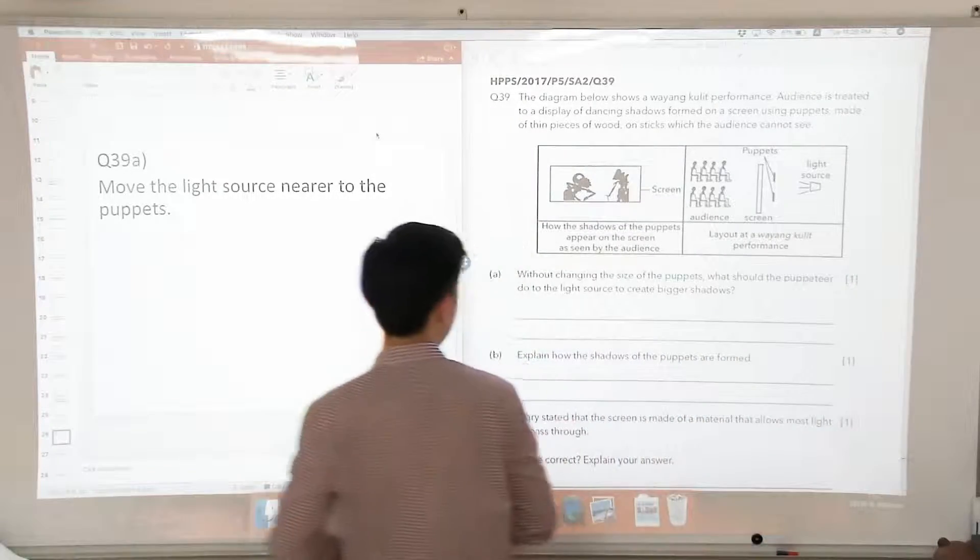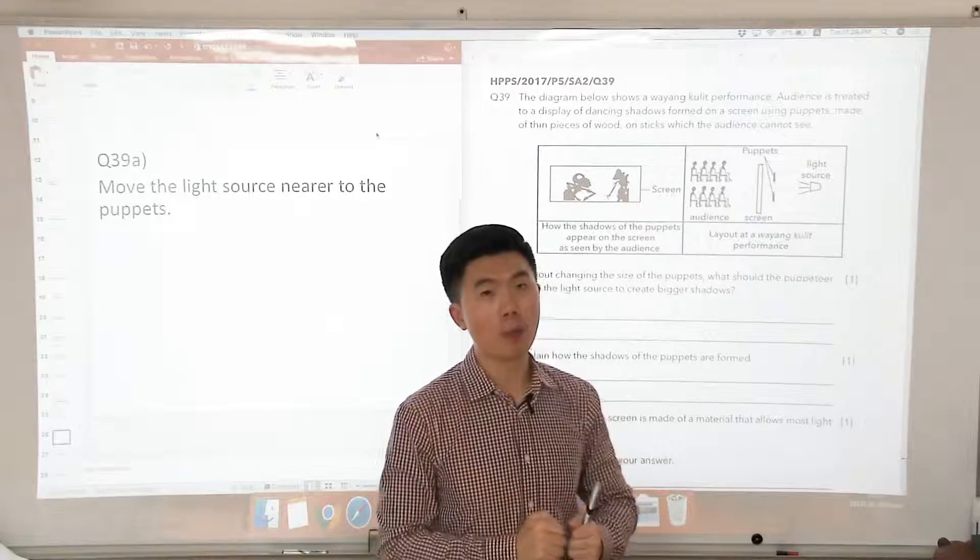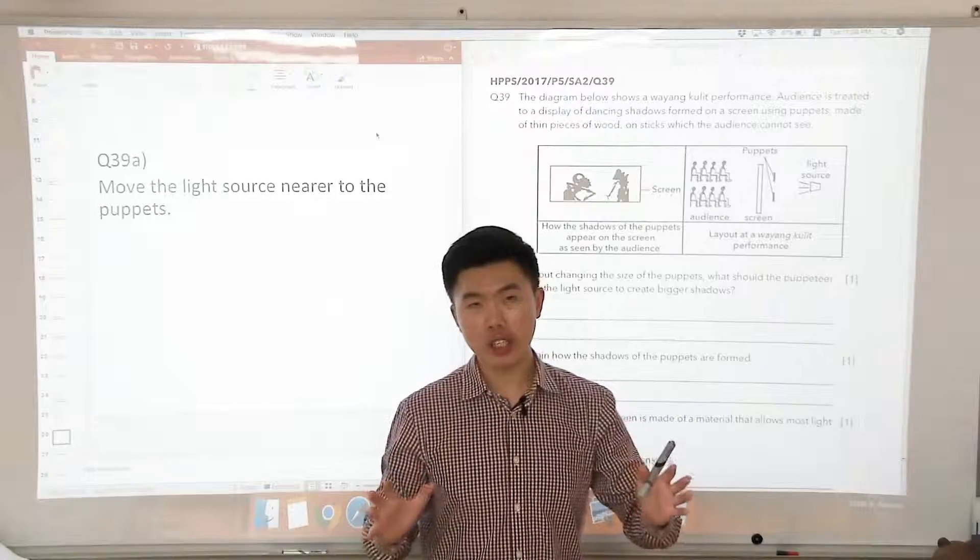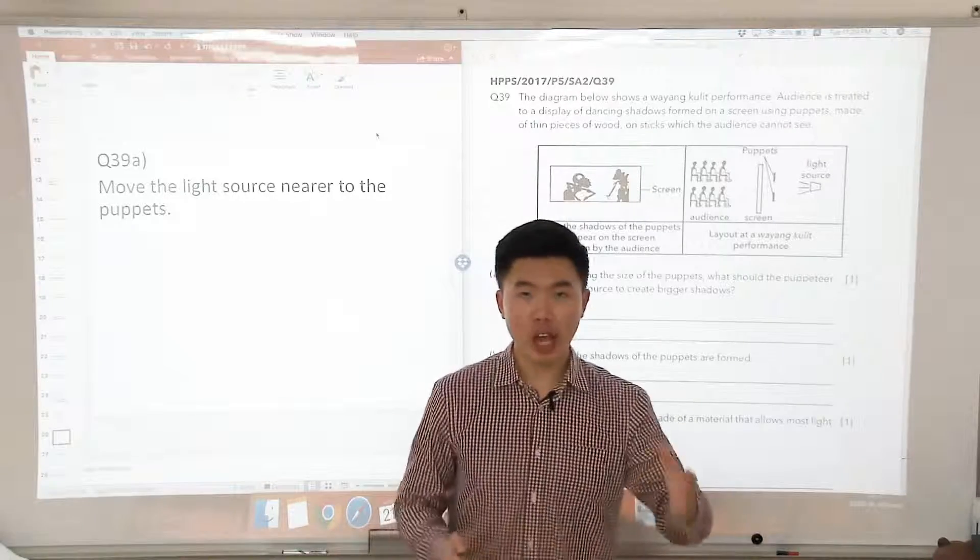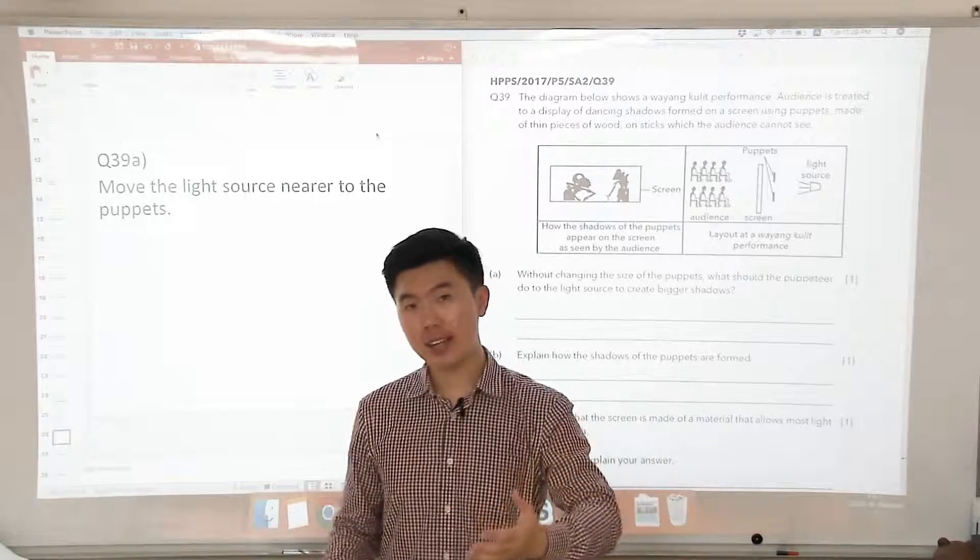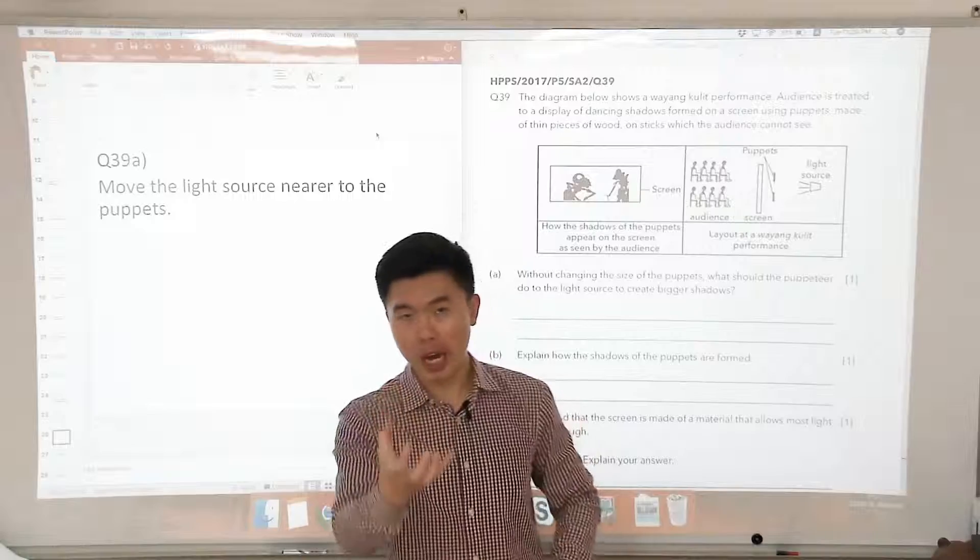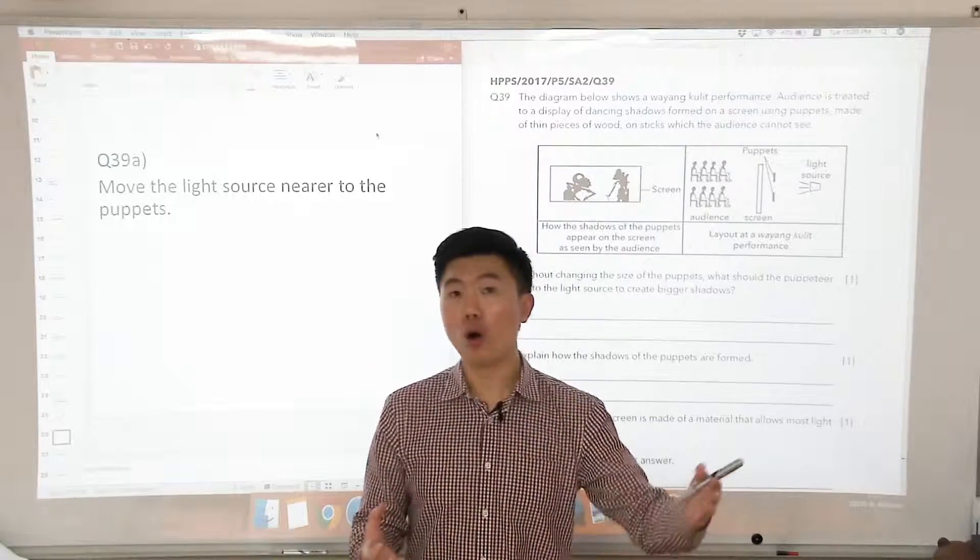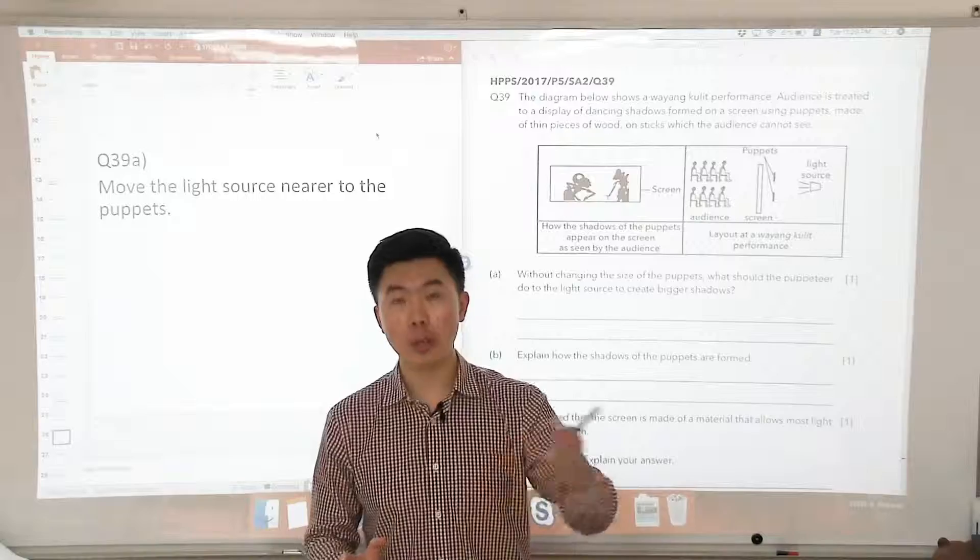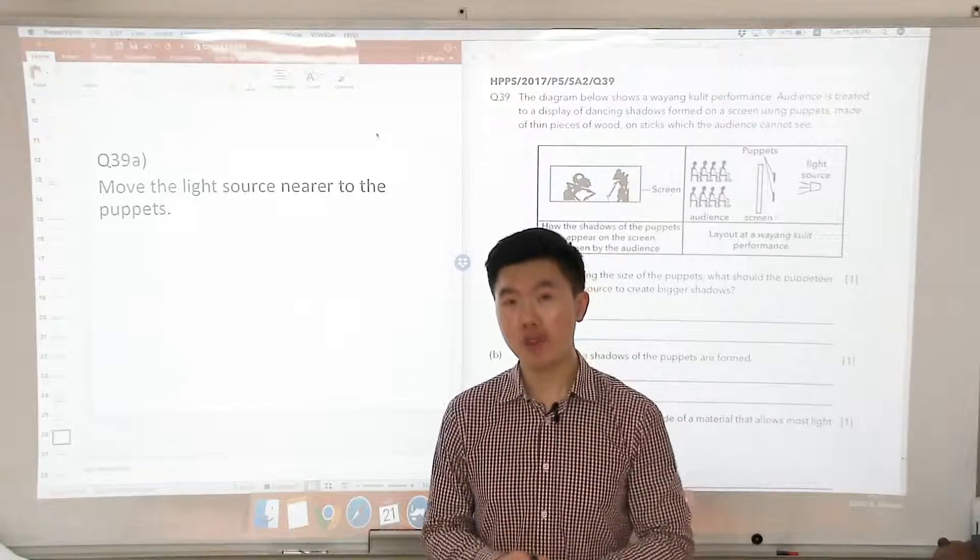How about part B? Explain how shadows of the puppets are formed. So generally, think about how shadows are formed. There is a template structure for shadows. We say that shadows are formed when the path of light from the light source, which travels in a straight line, is blocked by an object which is opaque or translucent. Opaque and translucent objects block light, and as long as they block light, shadows can be formed.